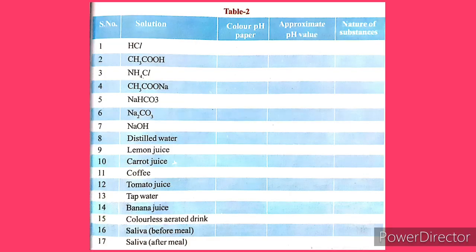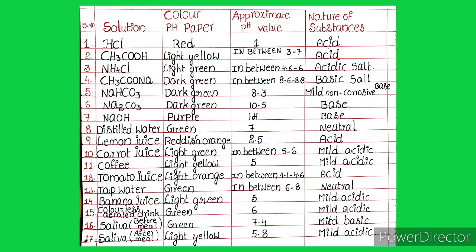Look at the table. There are some solutions listed: acids, bases, and neutral solutions. By using pH paper, test these solutions, note the color, and determine the approximate pH value and the nature of the substance. For example, the first solution is hydrochloric acid. When pH paper is dipped in HCl solution, it turns red, meaning the pH value of HCl is approximately 1 — less than 7 — so the nature of the substance is acidic.